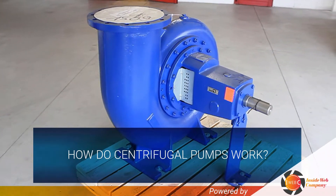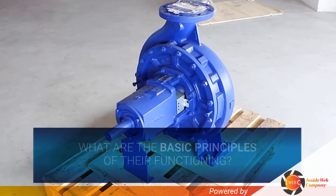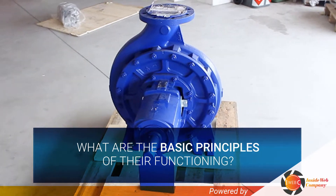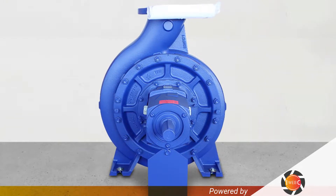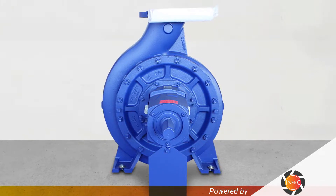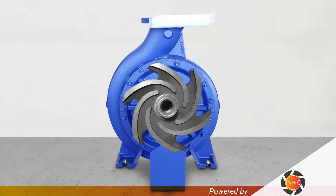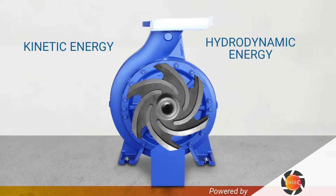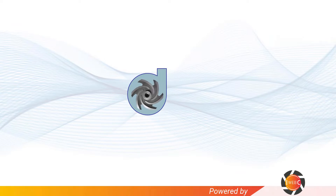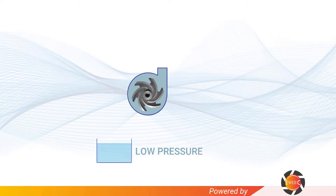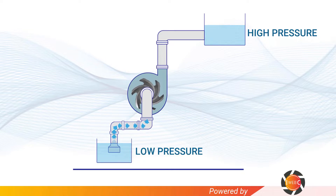How do centrifugal pumps work, what are they for, and what are the basic principles of their functioning? The centrifugal pump is the most commonly used pump in both industrial and civil sectors. This type of pump converts the rotational energy of its impeller into energy in a moving fluid, transforming mechanical energy first into kinetic energy and then into hydrodynamic energy. The basic principle is to transfer fluid from a region of low pressure to a region of high pressure.